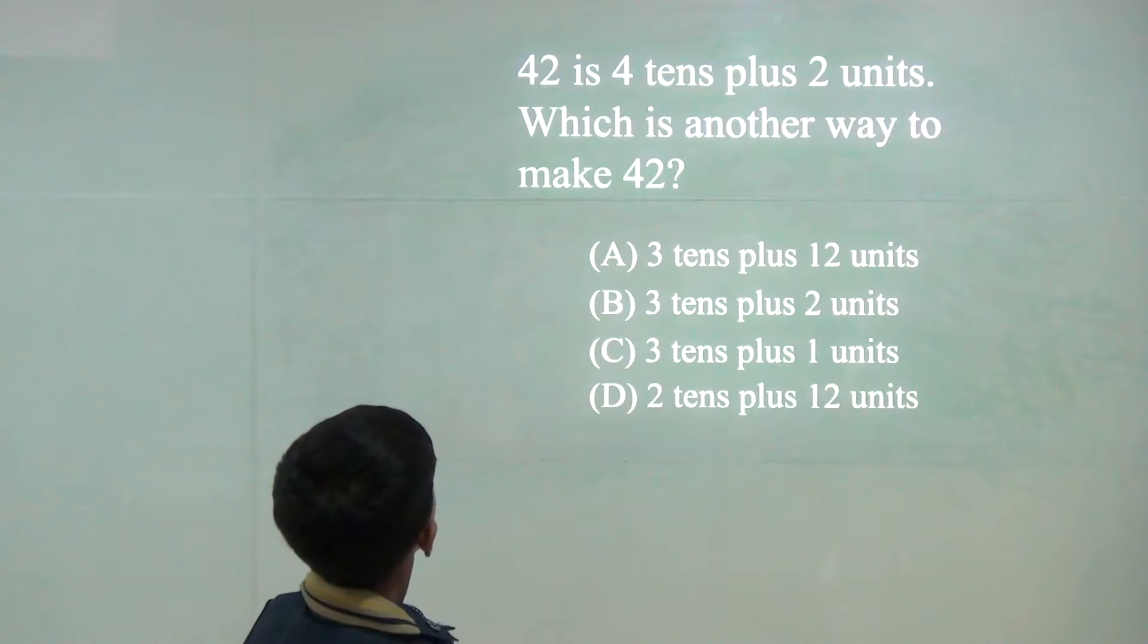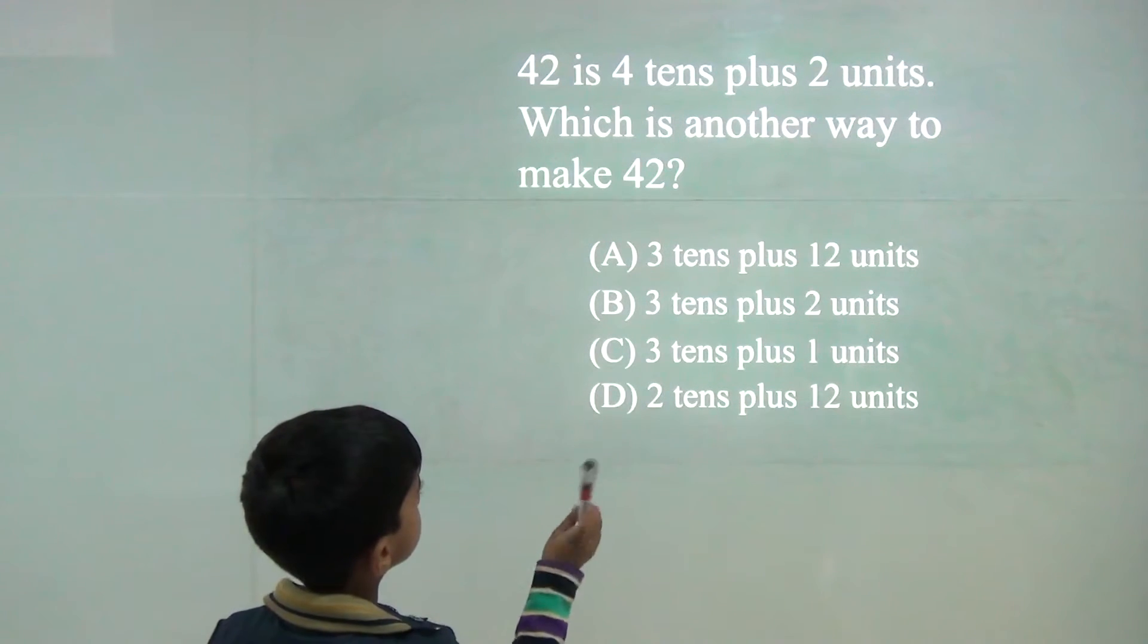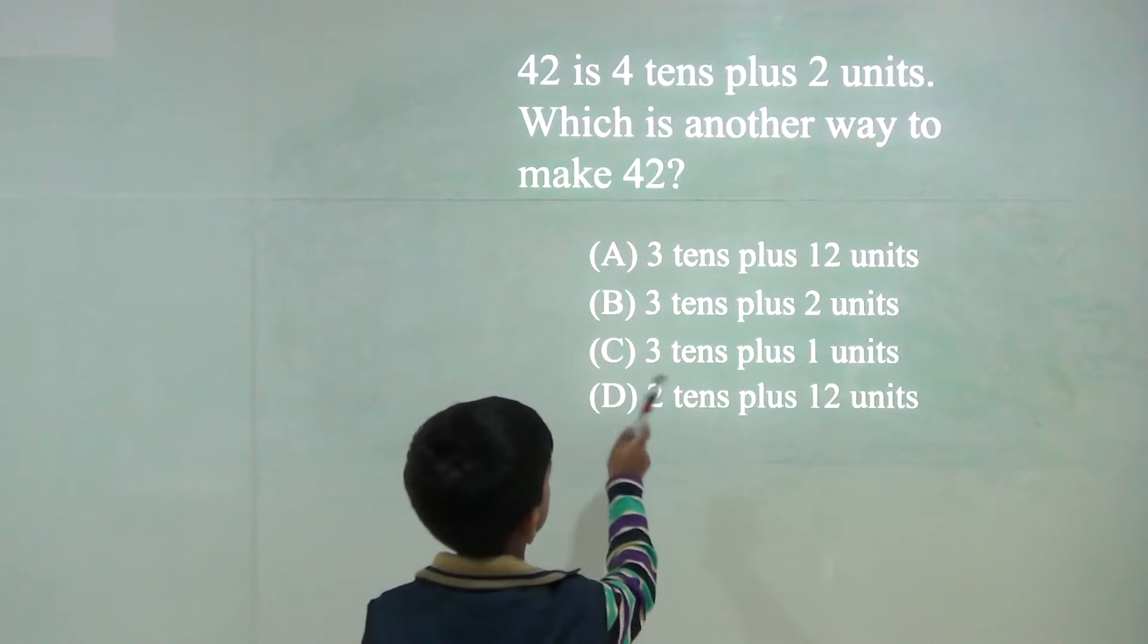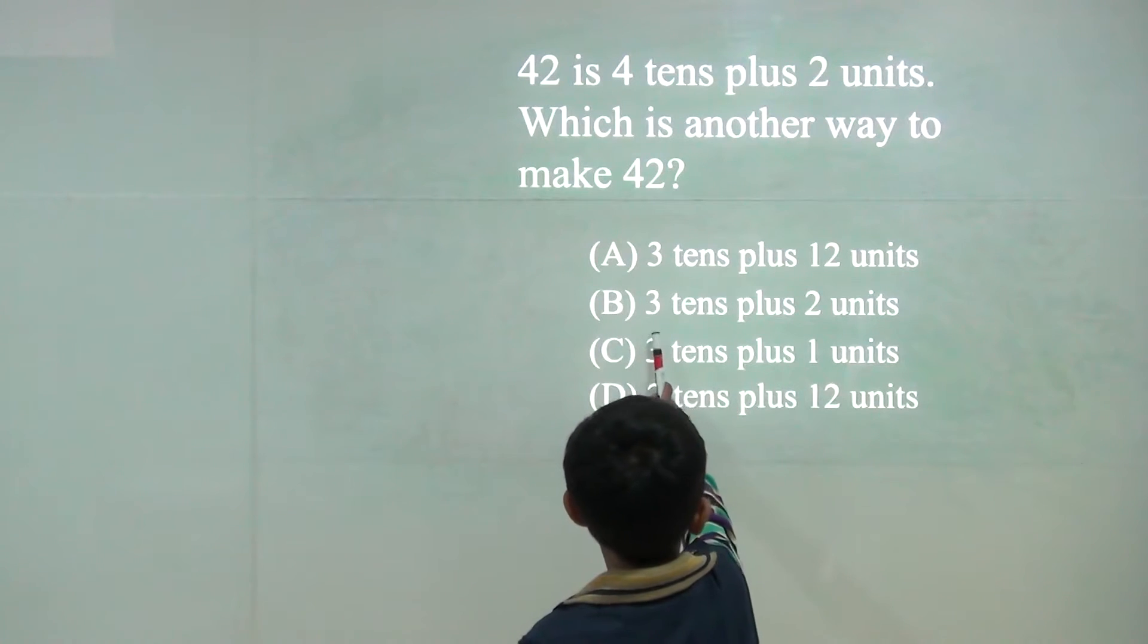Now 42 is 4 tens plus 2 units. Which is another way to make 42? So 3 tens plus 12 units. We can't do it.